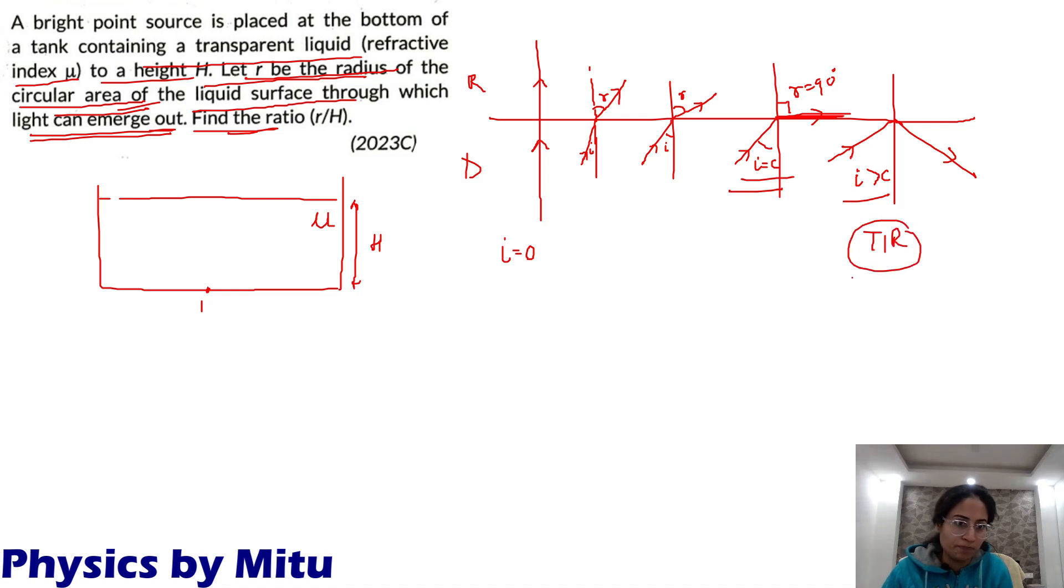This is the concept of TIR. You keep on increasing the angle of incidence. At a certain angle of incidence, angle of refraction becomes 90. This incidence angle is called critical angle. And if angle of incidence is increased beyond critical angle, TIR takes place.